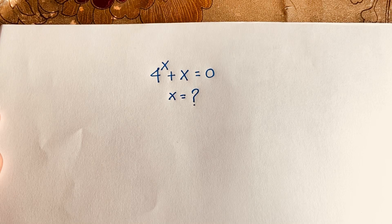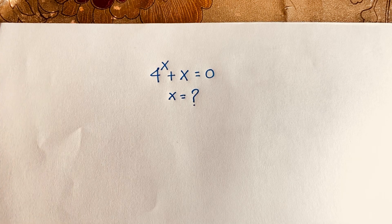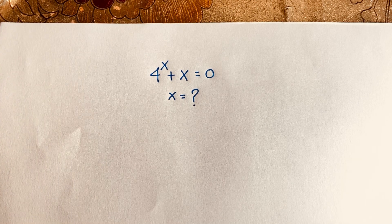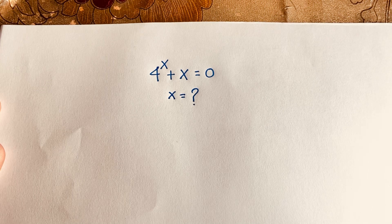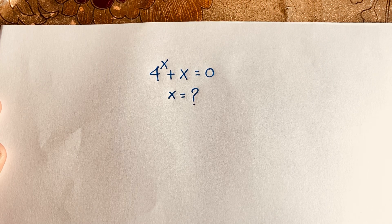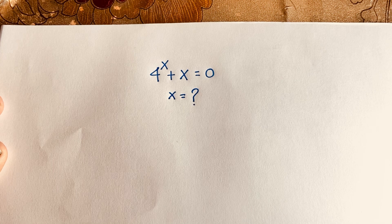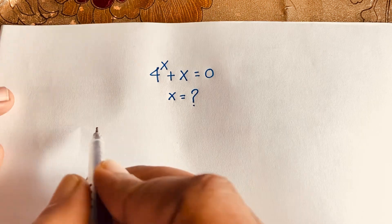Hello everyone. In this video, we have solved this junior math problem — an exponential equation: 4 to the power x plus x is equal to 0. x is equal to what? How do we solve this exponential expression?